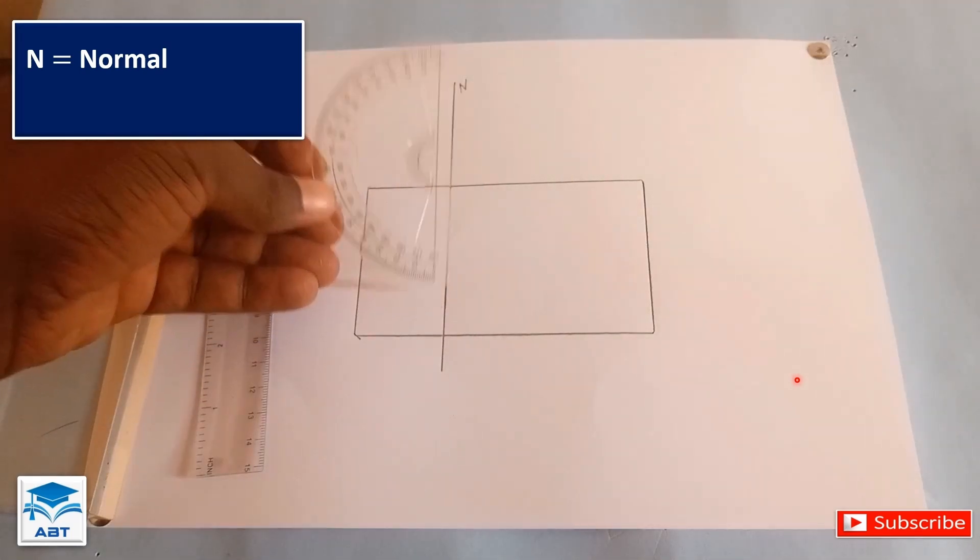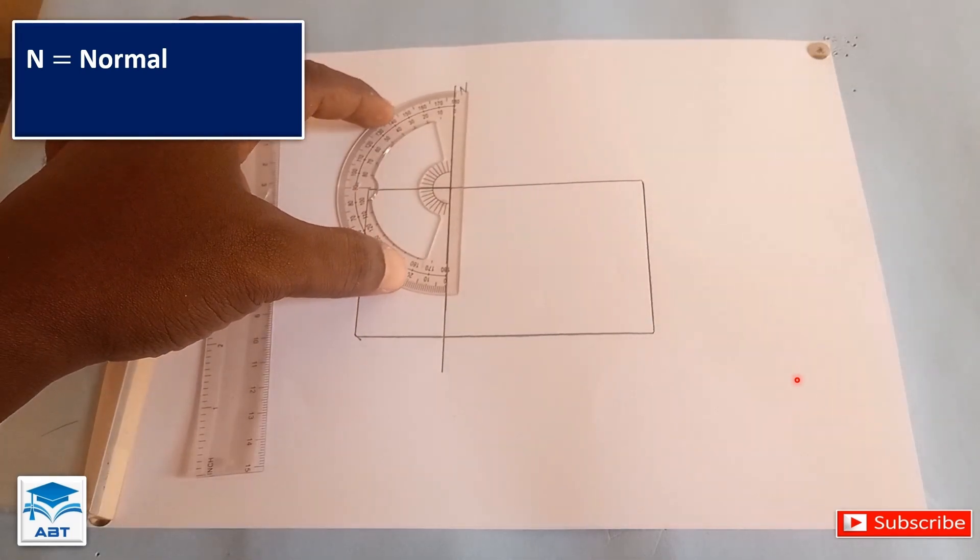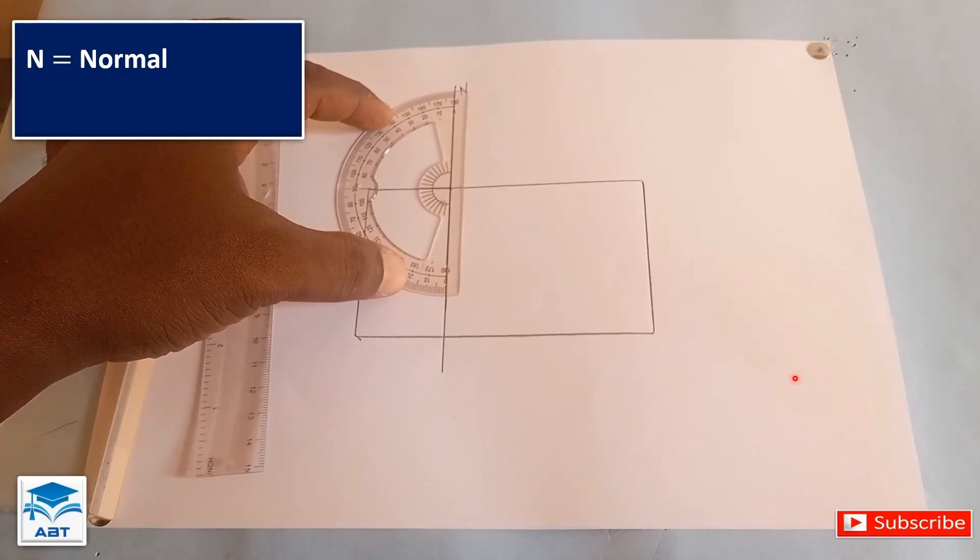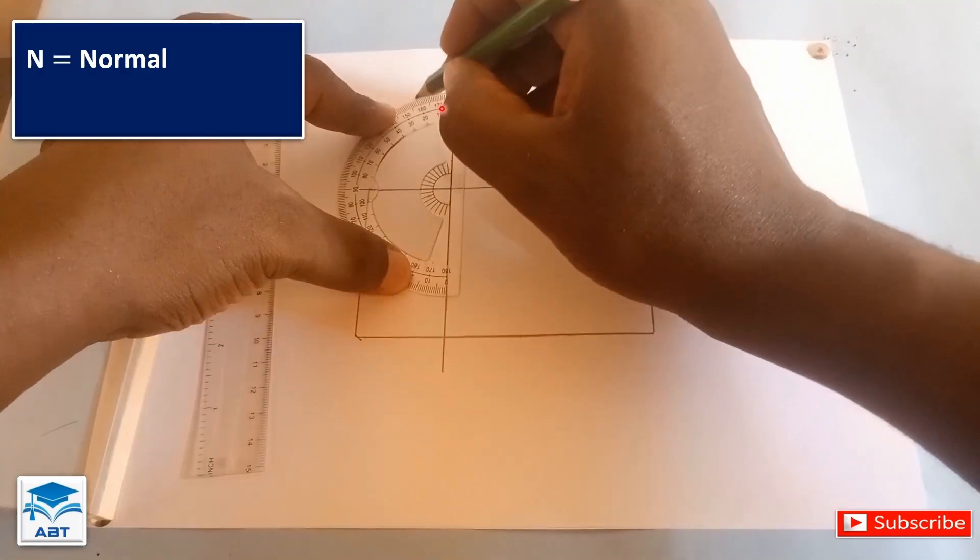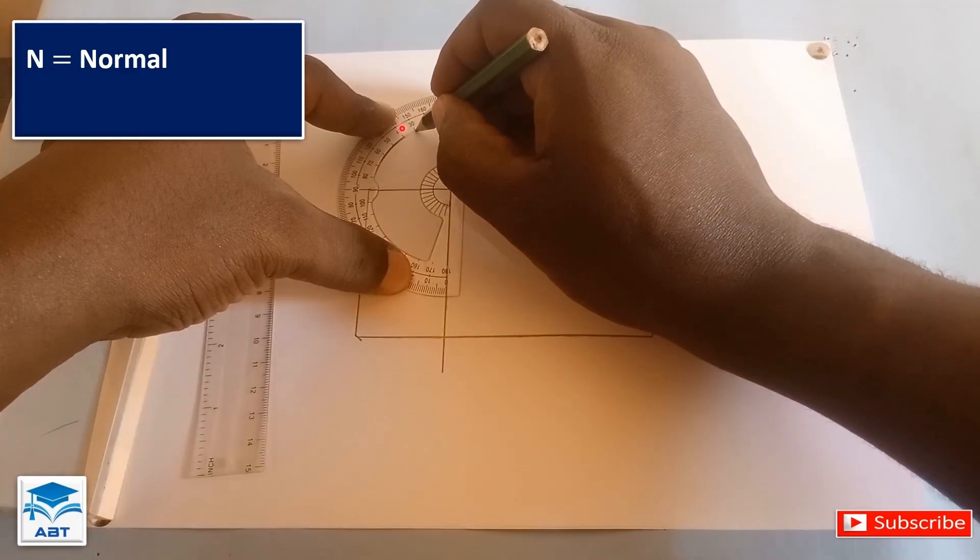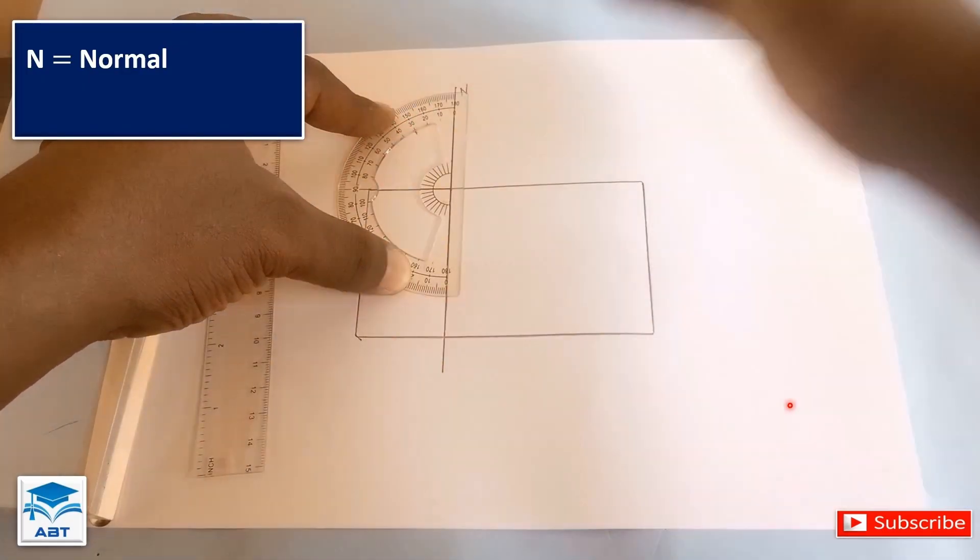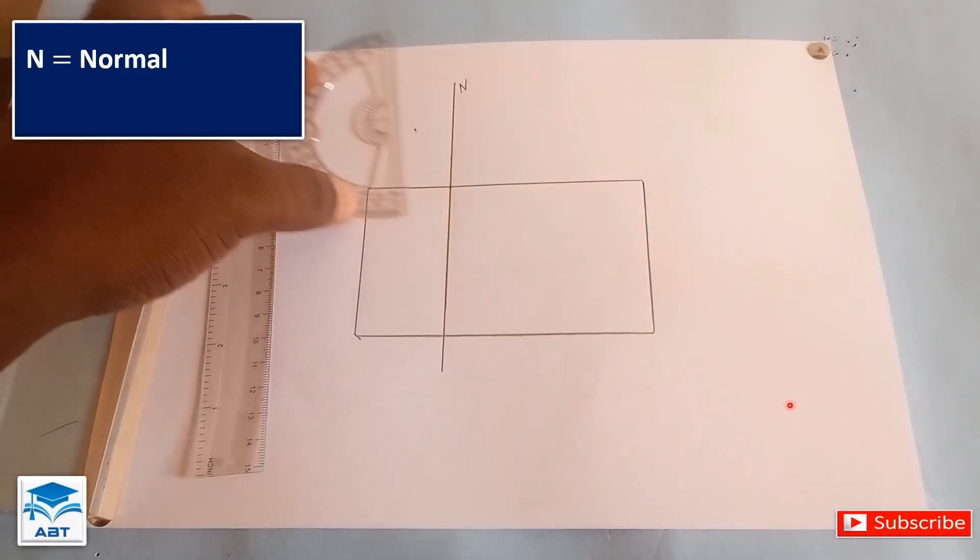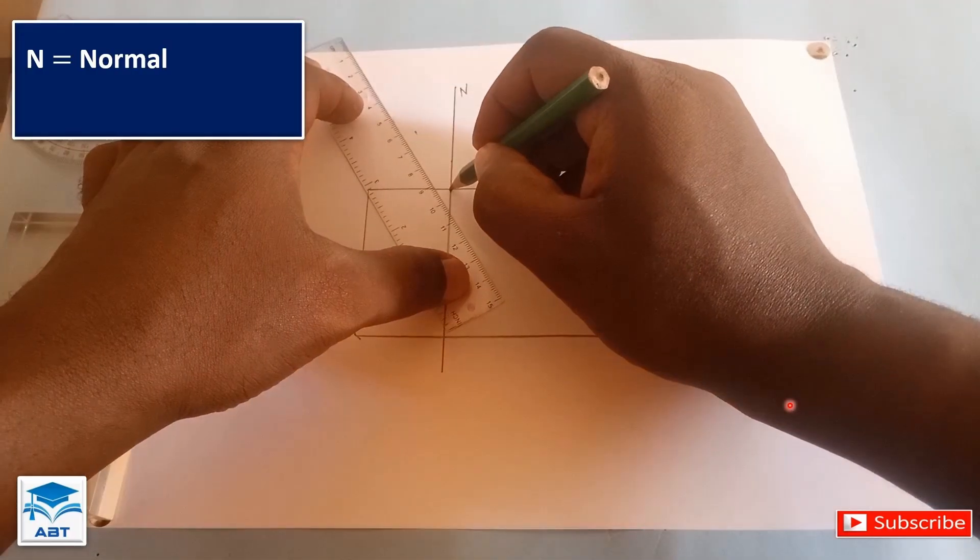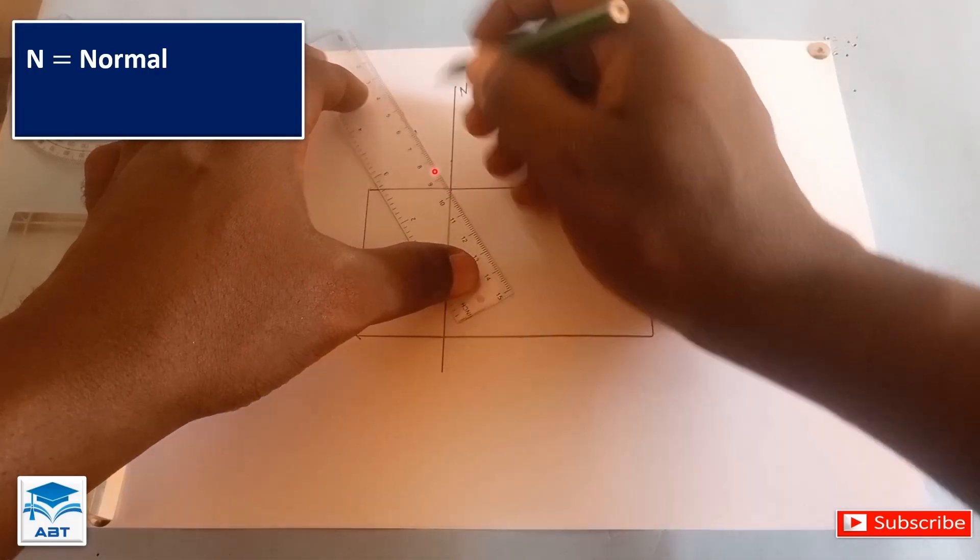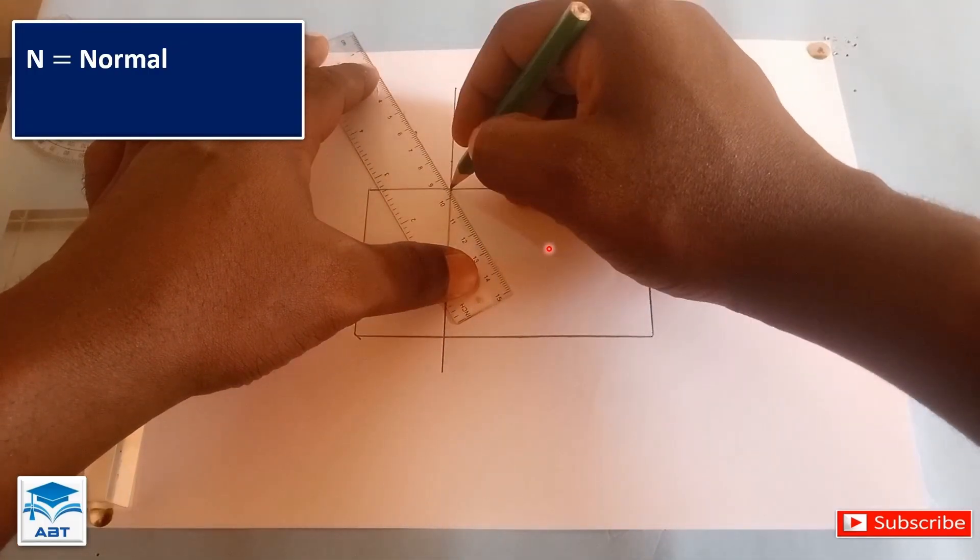Now we are going to measure an angle of incidence, let's say 30 degrees from the normal. So we put the baseline of the protractor on the normal and measure 30 degrees from this side, put a point there and draw a straight line passing through the point of incidence and the 30 degrees point.